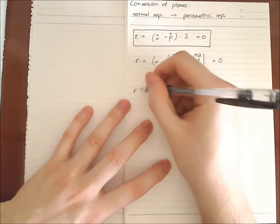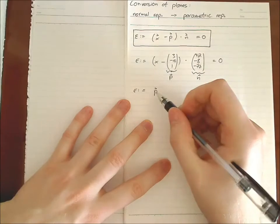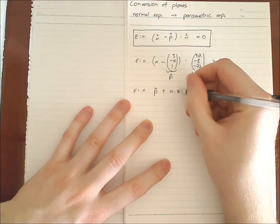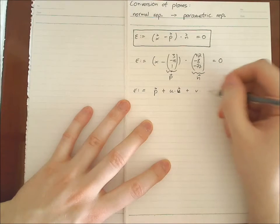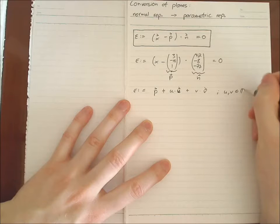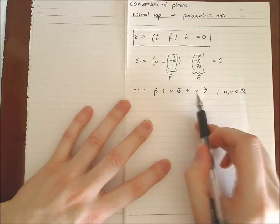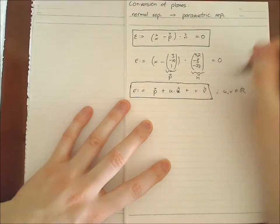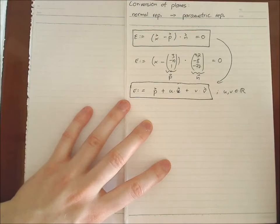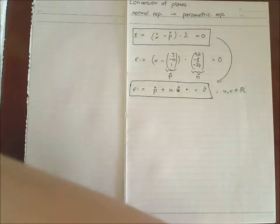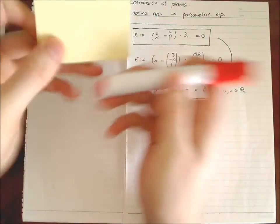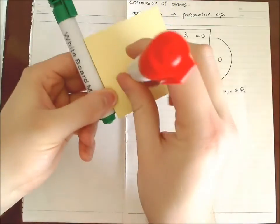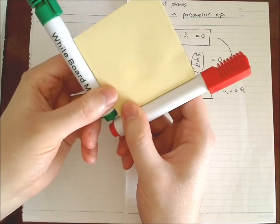Let me first show what the parametric representation looks like. We have a support vector p — which we can take from above — plus u times vector u, plus v times vector v, where u and v are real numbers (elements of ℝ). That is called the parametric representation. So we want to go from the normal representation to this, meaning we need two vectors that are 90 degrees to the normal vector.